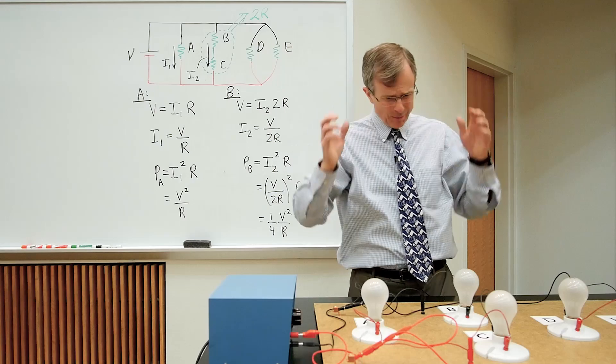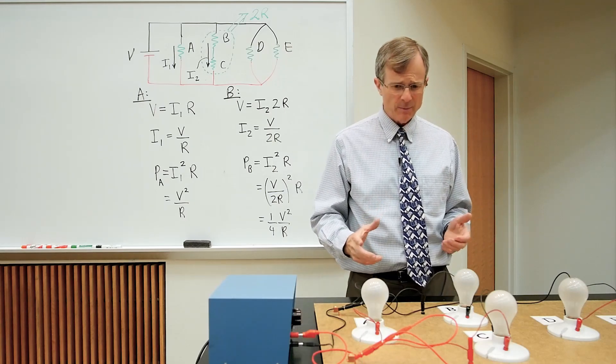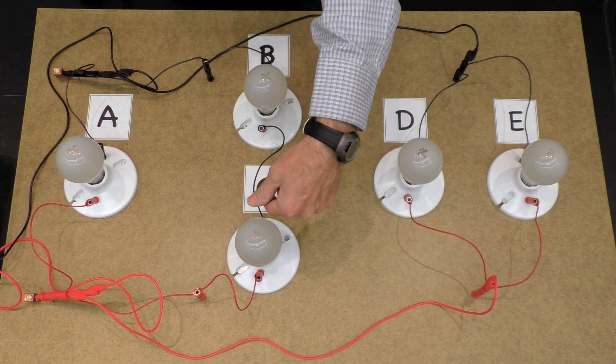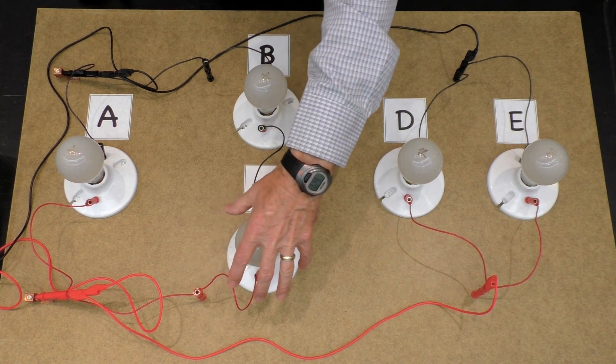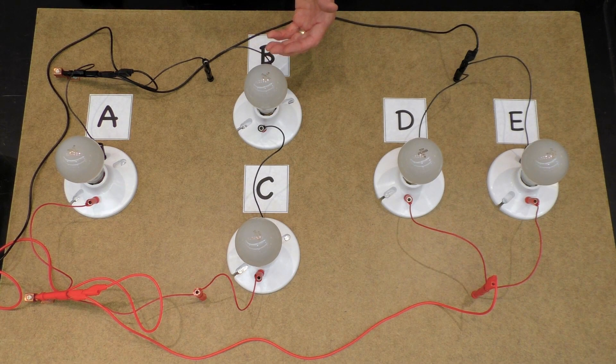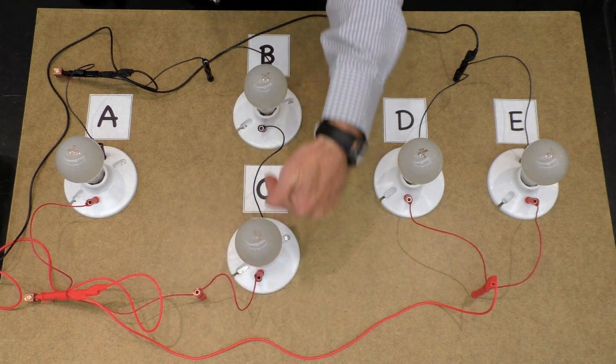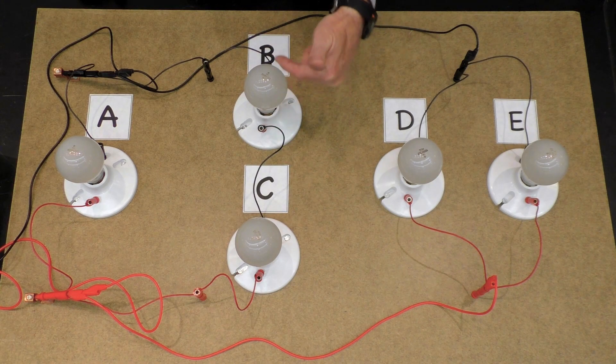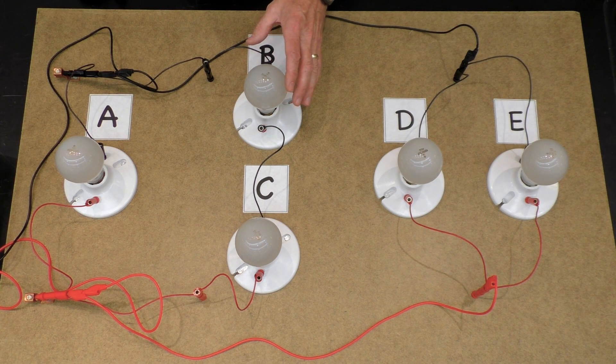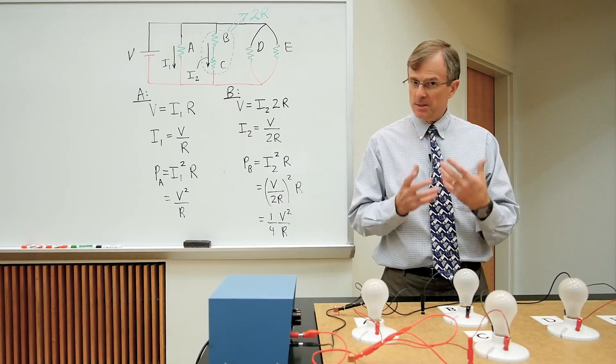And you might ask, well, hang on Dr. Edwards, this is not making sense to me because I have current coming through this resistor. Shouldn't it use up some of the current? So, bulb C should be burning brighter than bulb B because this uses up some of the current, and then that current isn't available to light up bulb B that's in series. And that's not the case.